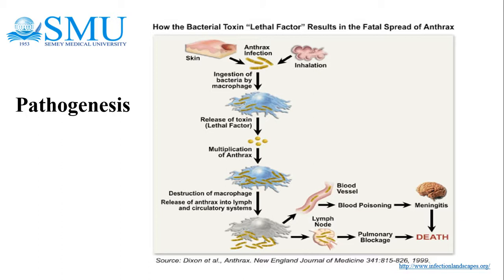The vegetative bacteria are then released from the macrophages, multiply in the lymphatic system, and enter the bloodstream until there are as many as 10⁷ to 10⁸ organisms per milliliter of blood, causing massive septicemia. Once released from macrophages, there is no evidence that an immune response is initiated against the vegetative bacilli.